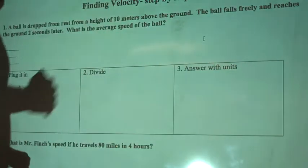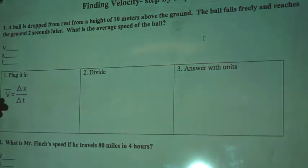So, find velocity. A ball is dropped from rest from a height of 10 meters above the ground. The ball falls freely and reaches the ground 2 seconds later. What is the average speed of the ball?